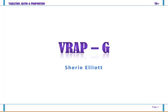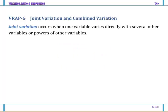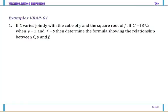This video is for section VRAP. In this video we're looking at joint variation and combined variation. Joint variation occurs when one variable varies directly with several other variables or powers of other variables. Combined variation is where we combine the direct and inverse variation.